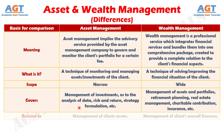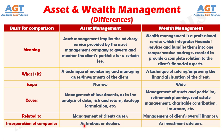Number 5: Asset management is concerned with the management of assets or investments on behalf of clients. Whereas wealth management is the management of overall finances of the client by a professional or an expert. Number 6: Asset management companies are registered as brokers or dealers. Conversely, wealth management companies are incorporated as investment advisors.